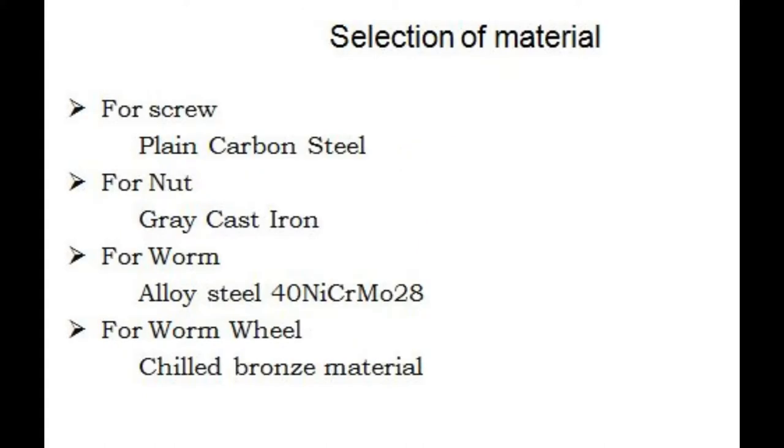Selection of material: For screw, we are selecting plain carbon steel. For nut, we are selecting grey cast iron. For worm, alloy steel 40NiCrMo28. For worm wheel, chilled bronze material.